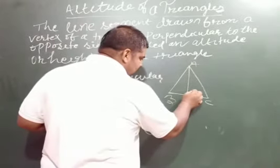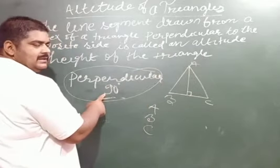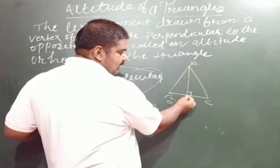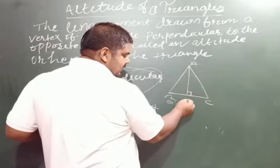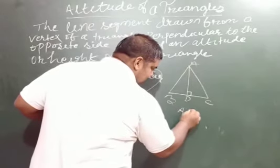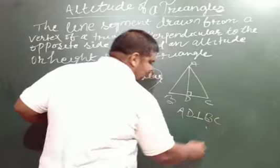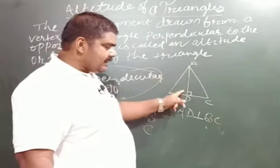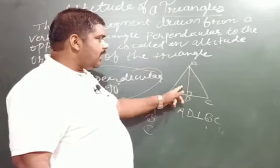Perpendicular means 90 degrees. So you have to draw from A to its opposite side BC at 90 degrees. Suppose this foot of perpendicular is point D. Then AD is known as the altitude of this triangle, or the perpendicular on BC. AD can be considered as the altitude or height of this triangle.